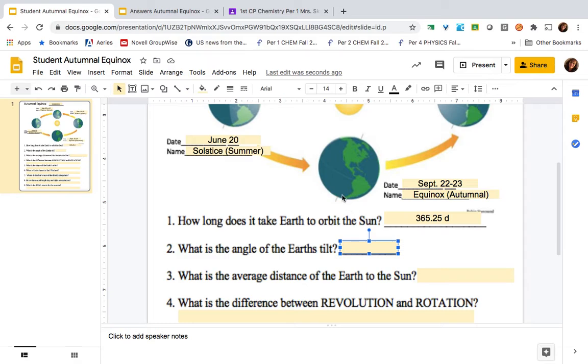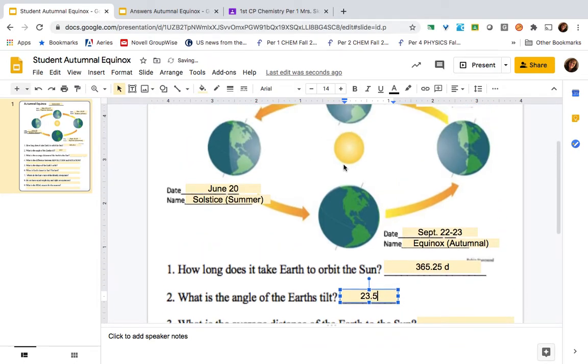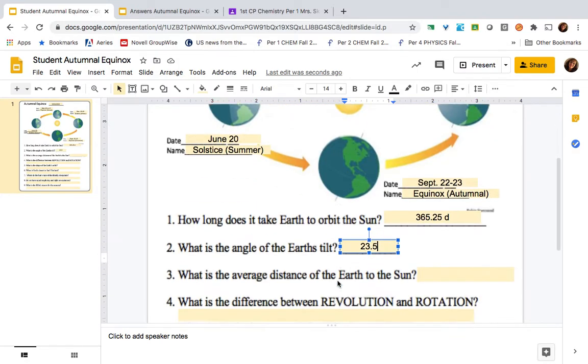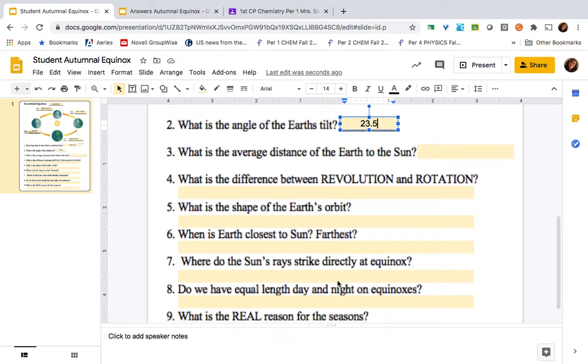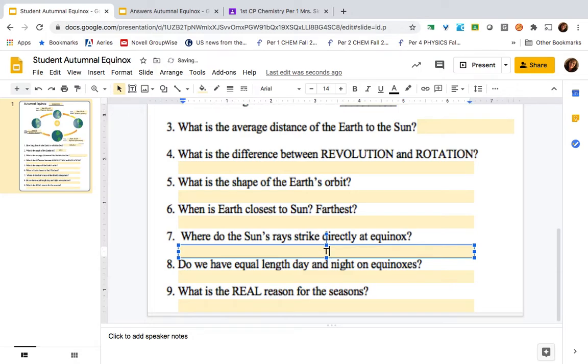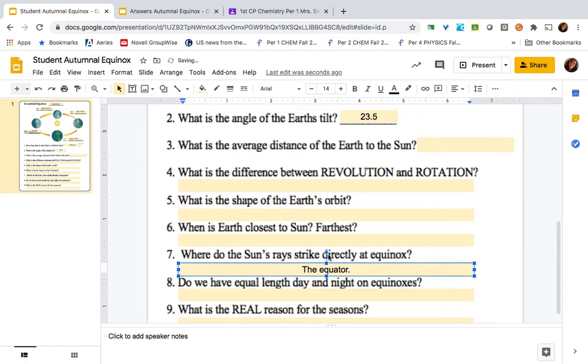The angle of the Earth's tilt, we are kind of like a giant top spinning in space. And this angle causes the sun's rays to hit directly at the equator only on equinoxes. And that is, there we go, number seven. On equinox, the sun's rays hit directly at the equator.